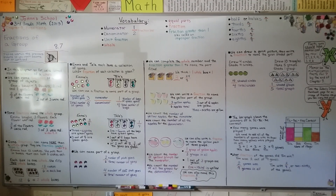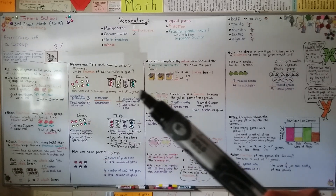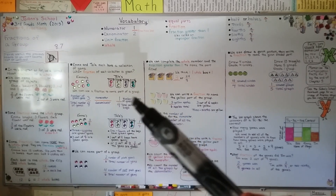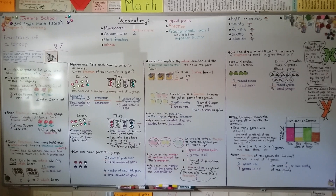In our next lesson, 8.8, we're going to be finding part of a group using unit fractions, and that's going to help you in fourth grade when you learn to multiply fractions. Remember, fractions of a group can be like Tala's gems — she has four bags, so that's four groups, and one of them is green, so one fourth is green.